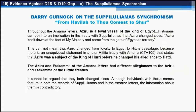Throughout the Amarna letters, Aziru is a loyal vassal of the king of Egypt, though historians point to an implication in the treaty with Suppiluliuma that Aziru changed sides. However, a later Hittite treaty with Amurru states unequivocally that Aziru was a subject of the king of Hurri before changing allegiance to Hatti. The Aziru and Aitakama of the Amarna letters had different allegiances to the Aziru and Aitakama of the Hittite treaties. Although individuals with these names feature in both records of Suppiluliuma and in the Amarna letters, the information about them is contradictory.